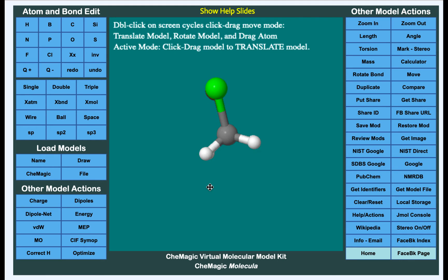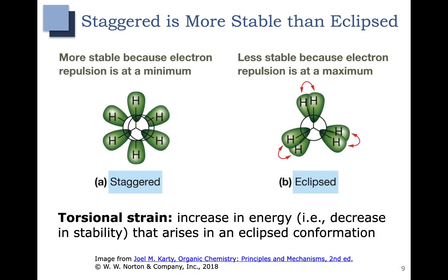This would be an example of an eclipsed conformation, where you can see that the front atoms are completely blocking the back atoms. The staggered conformation is much more stable than the eclipsed conformation because the groups are as far apart as possible and electron repulsion is at a minimum. As you rotate so those groups are right on top of each other, the electrons repel each other — electron repulsion is at a maximum. The eclipsed conformation is more strained or has higher energy, and we call this torsional strain. Staggered conformations are more stable and lower in energy than eclipsed conformations.